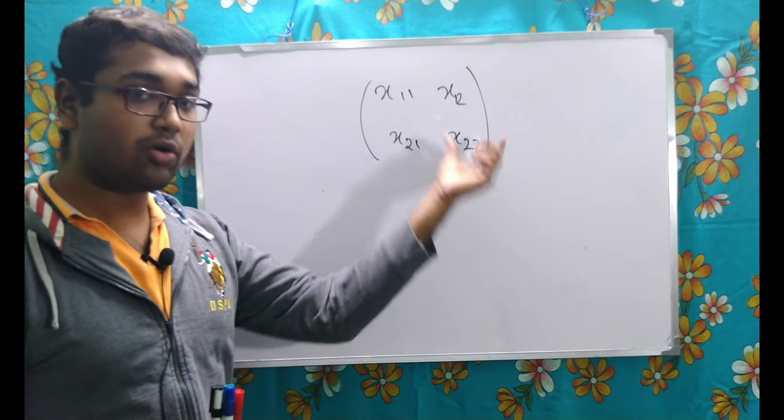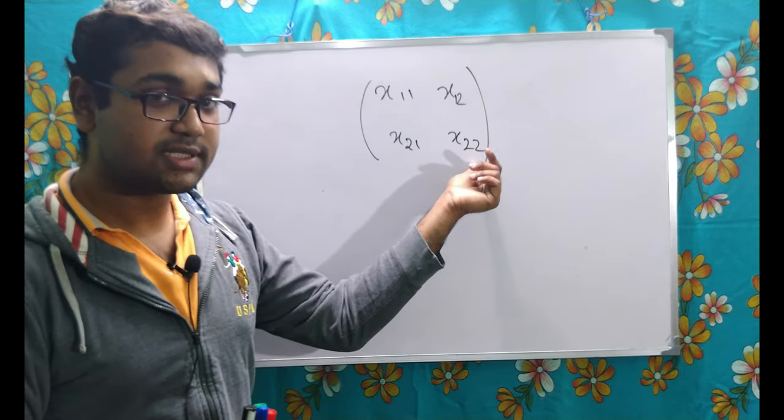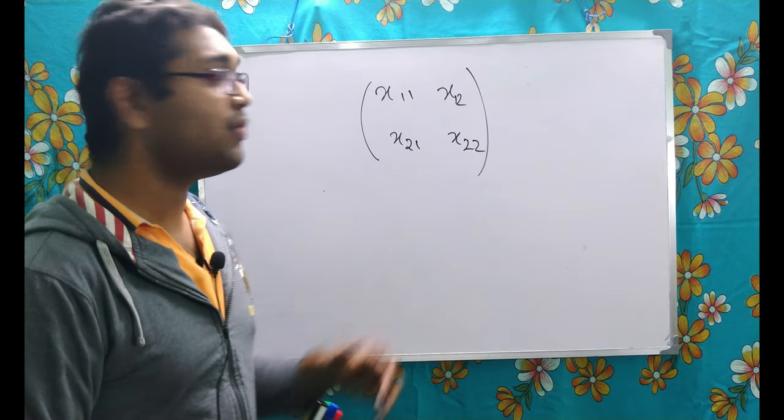2 comma 1, second row, first column, second row, second column. This is how we call it.